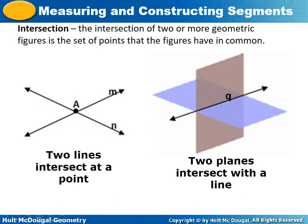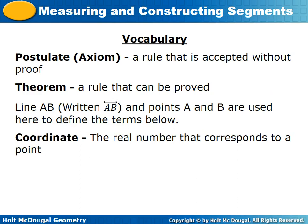Intersection: the intersection of two or more geometric figures is a set of points the figures have in common. When two lines intersect, they intersect at a point. When two planes intersect, they intersect with a line. A postulate is something we can state without proof — like when two lines intersect, they intersect at a point. A theorem is a rule that had to be proved — some mathematician went through a mathematical process to prove it was true.